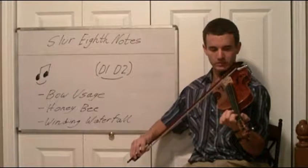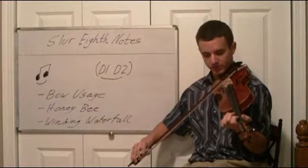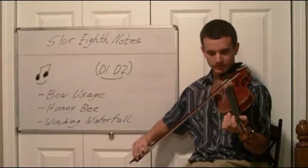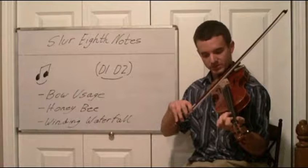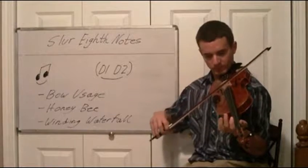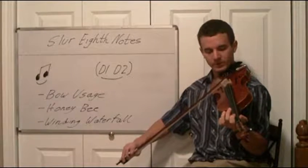Now this is what we're going to slur together. Two sets of eighth notes. So we're going to do A0 A1 slurred, A2 A0 slurred eighth notes. Then up bow A1 half note.